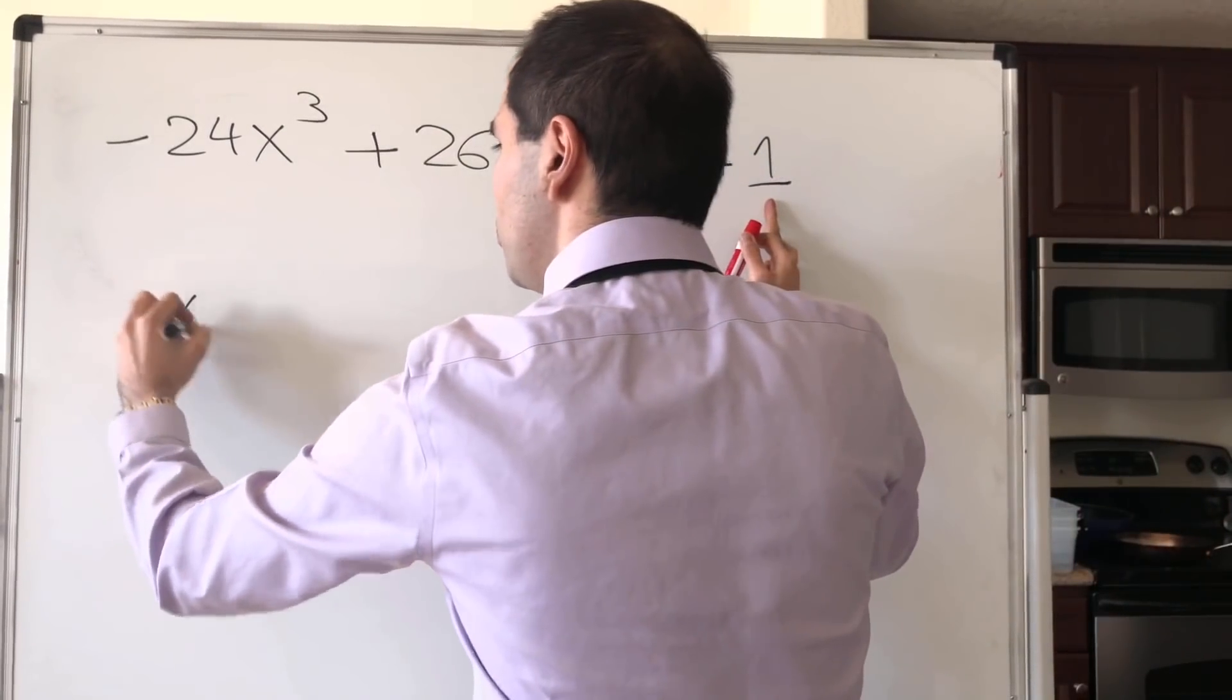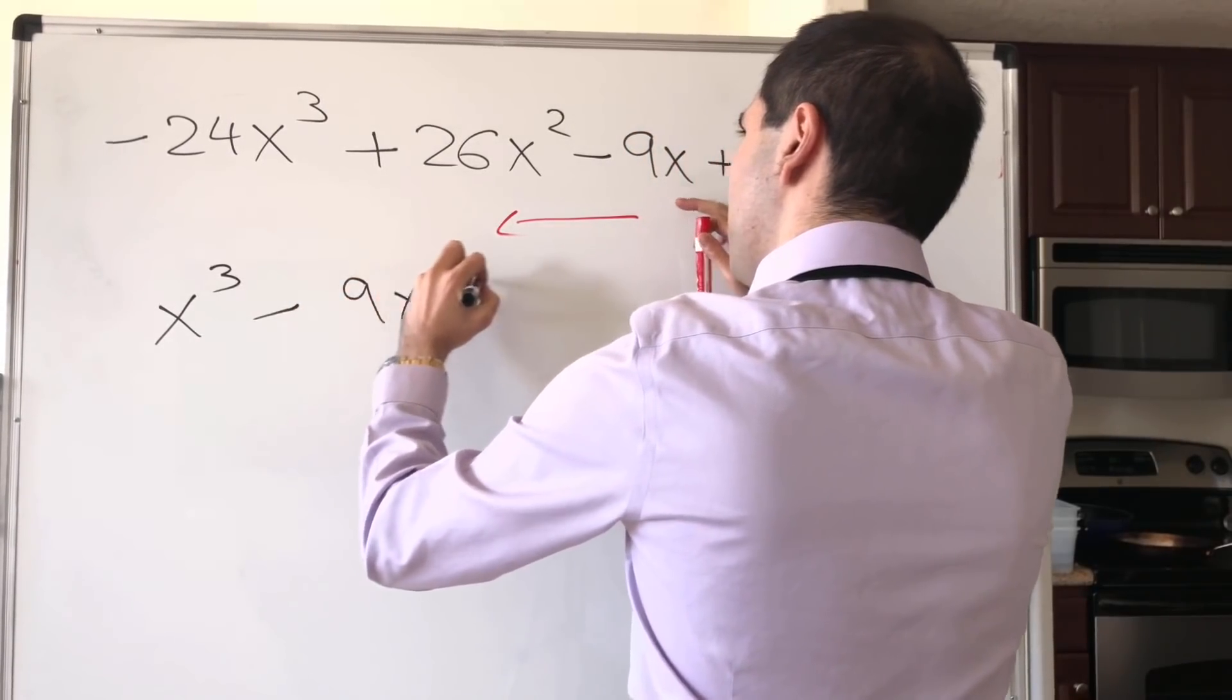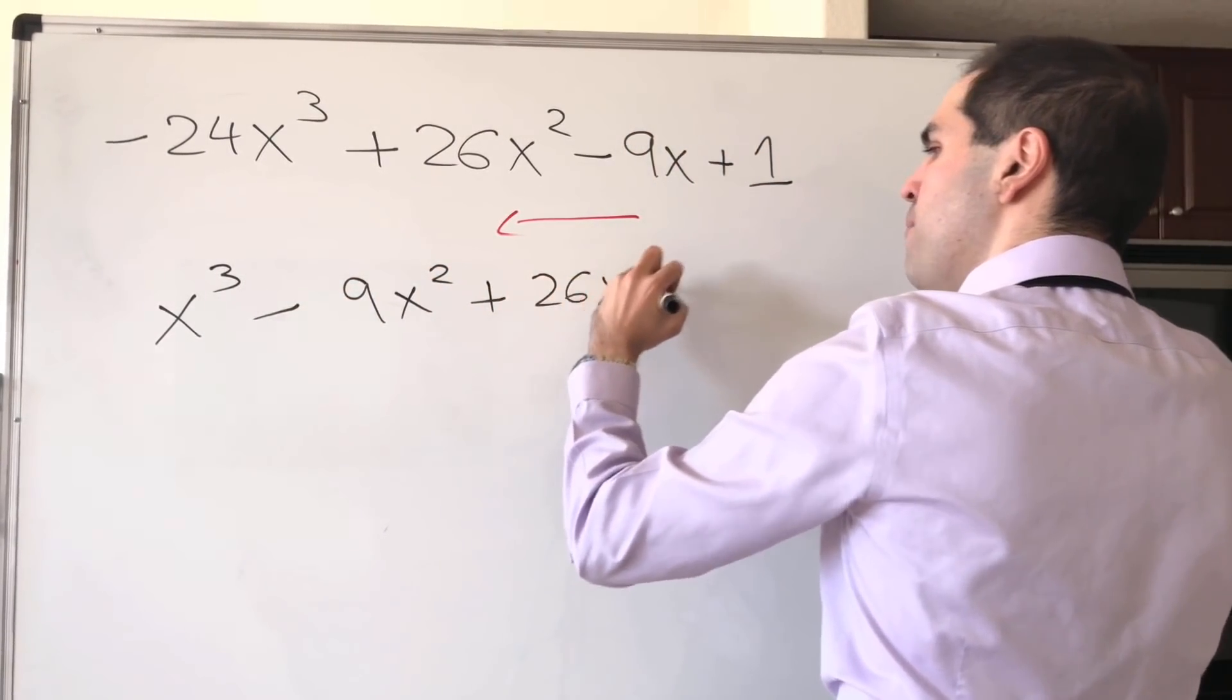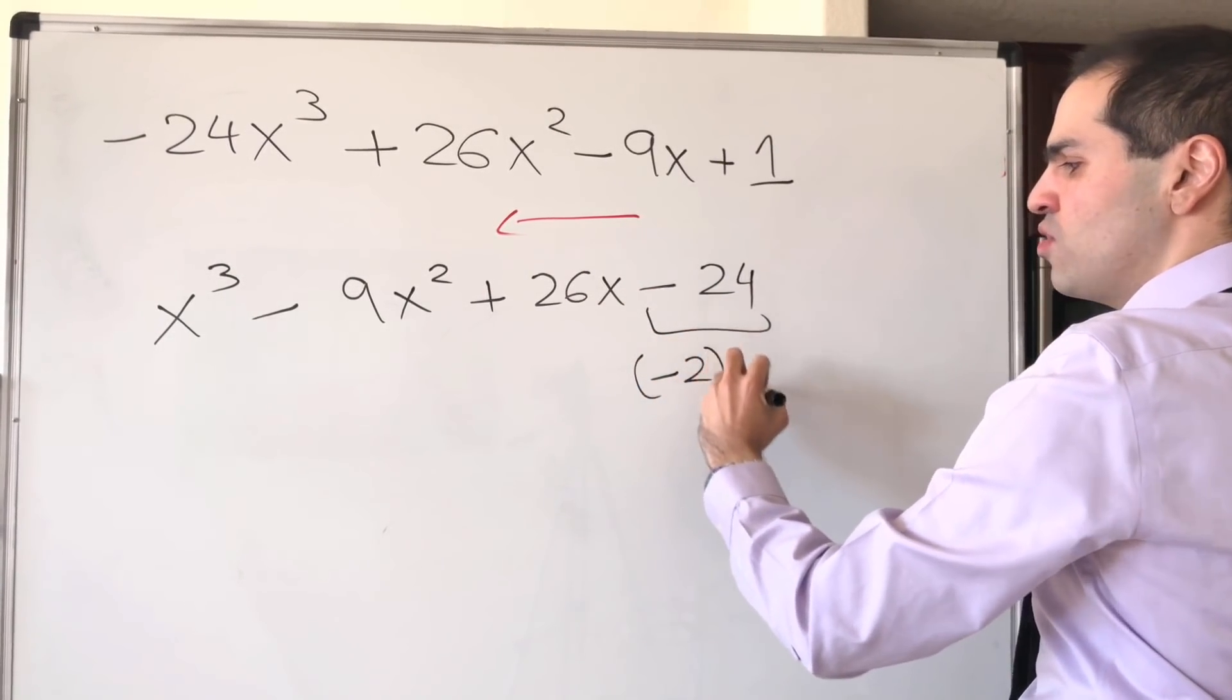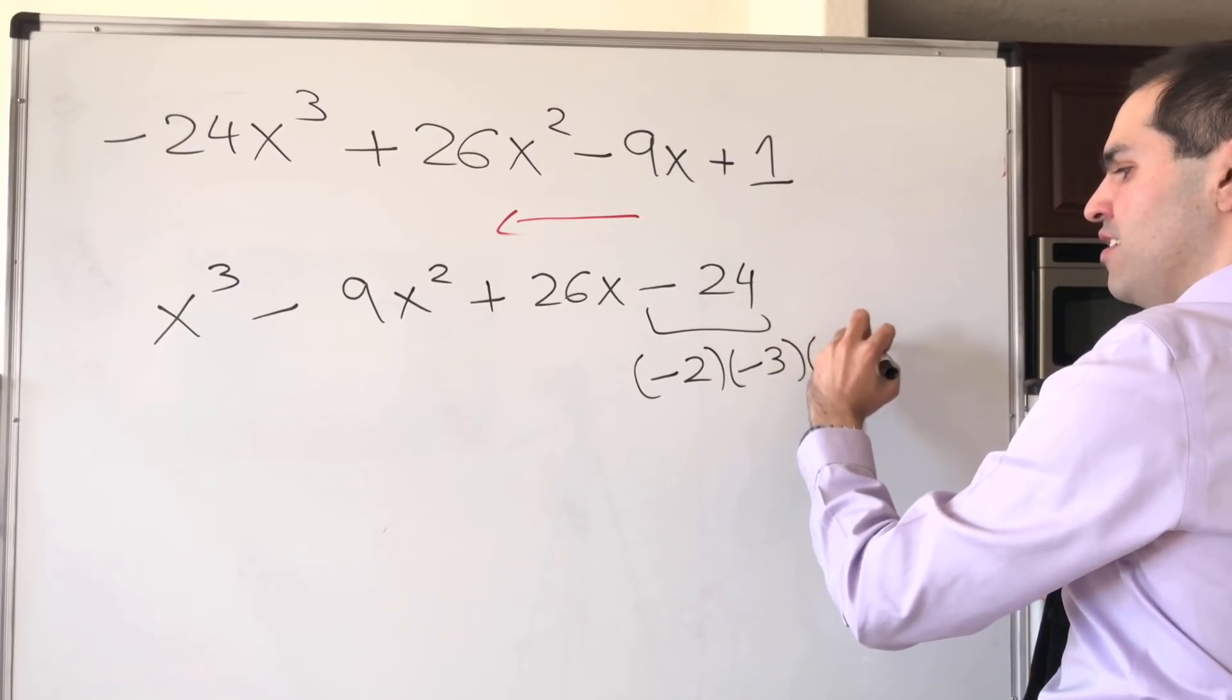So x cubed minus 9x squared plus 26x minus 24. Well, notice, minus 24, it's minus 2 times minus 3 times minus 4.